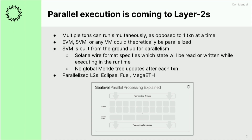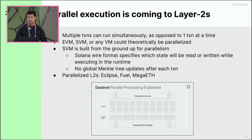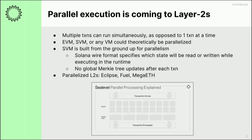This talk is about parallel VM L2s. We're not the only one — there's Fuel, there's MegaETH coming up. This introduces new advantages to the Ethereum L2 landscape but also new challenges. Parallel execution theoretically could be applied to any VM — even the EVM could be parallelized, and there are folks like Monad and MegaETH working on that. But VMs like the Solana VM are built from the ground up for parallelism. In the wire format itself, it specifies which accounts are being accessed, so the scheduler can more effectively optimize transaction execution. Another optimization is that Solana doesn't update the global Merkle tree after every transaction.